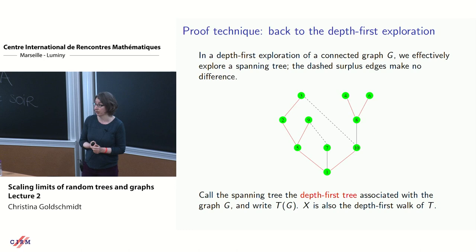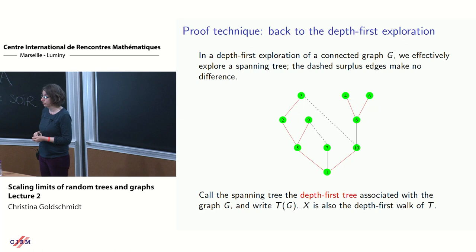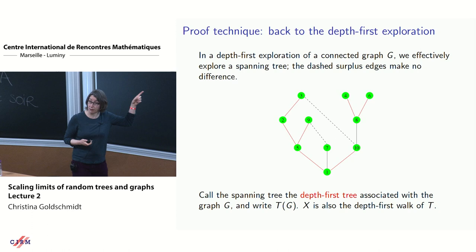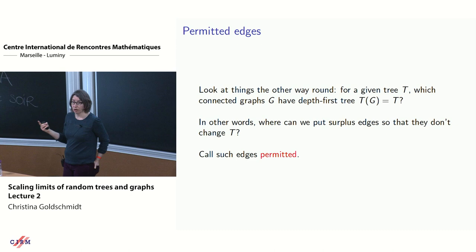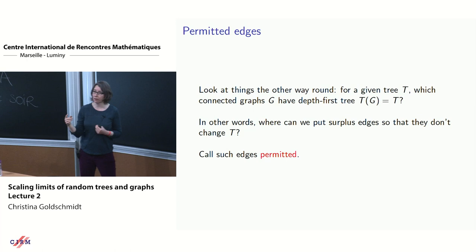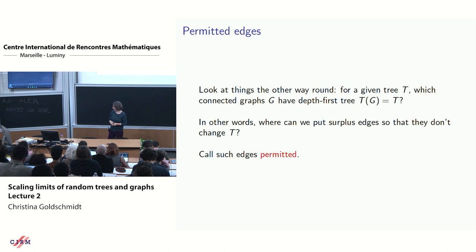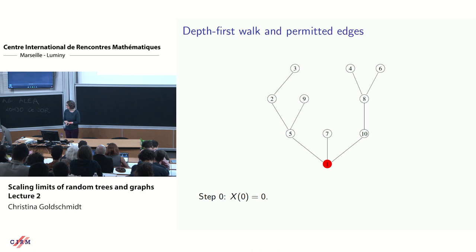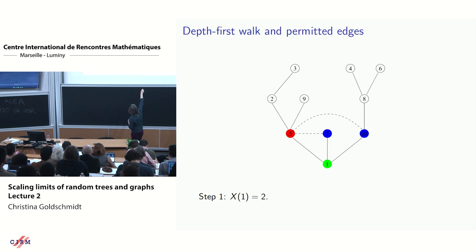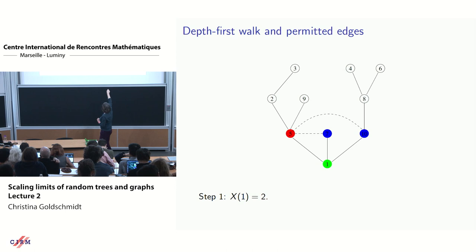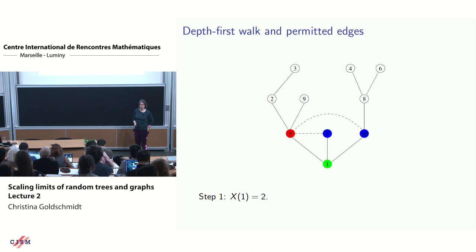Starting from the spanning tree, which connected graphs have T(g) as their depth-first tree? Call edges 'permitted' if including them wouldn't change the depth-first tree. A permitted edge from a current vertex goes to a vertex already sitting on the stack — one seen but not yet explored. At step k there are exactly x(k) permitted edges, so the total number of permitted edges is the sum of x(k) over all steps — the discrete area under the depth-first walk, which we call the area of the tree.